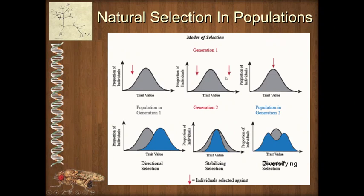In our second example, we have selection on both extremes — the short individuals don't do well and the tall individuals don't do well. What we end up with is something called stabilizing selection, sometimes also called balancing selection. In stabilizing selection, we end up with loss of the extremes and more individuals in the middle. If the environment can still support the same number of individuals, the normal curve should be a little bit taller, with more individuals concentrated in the middle.